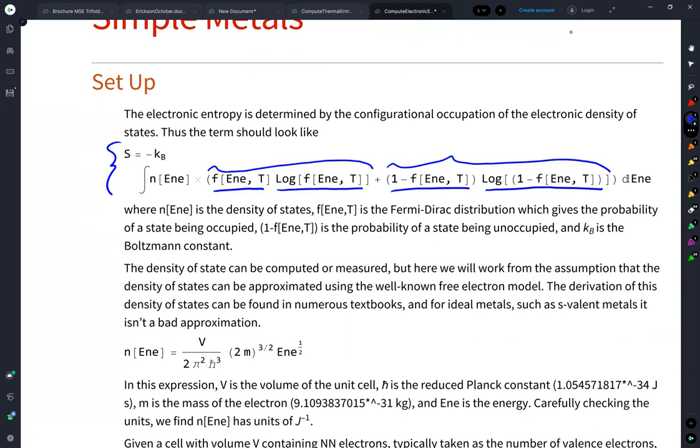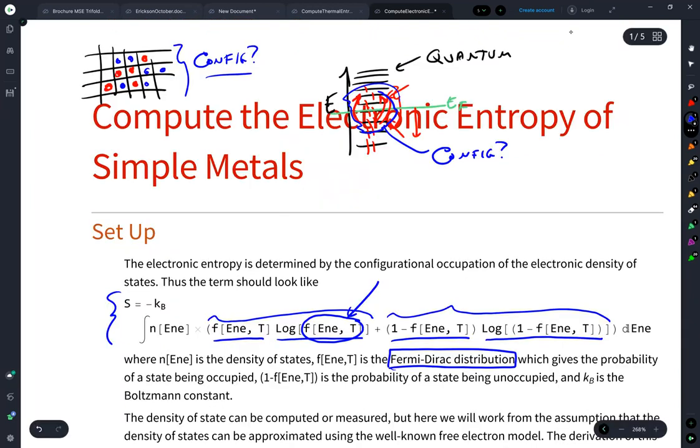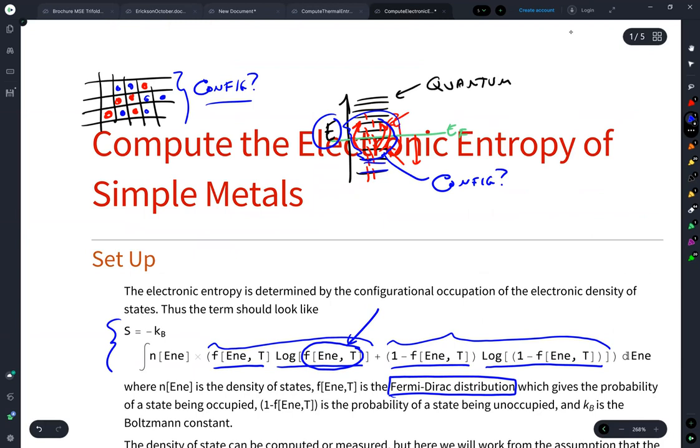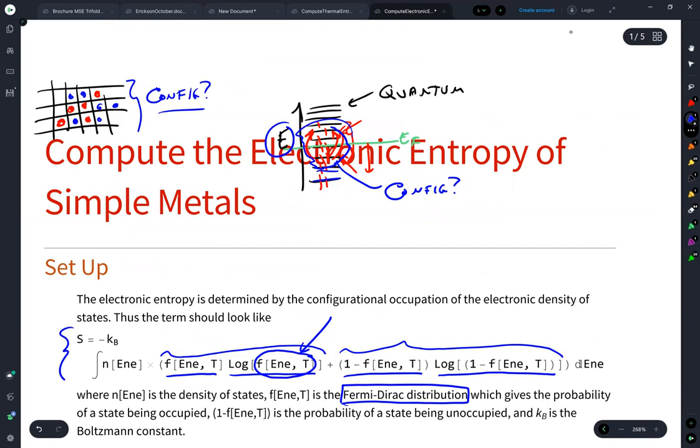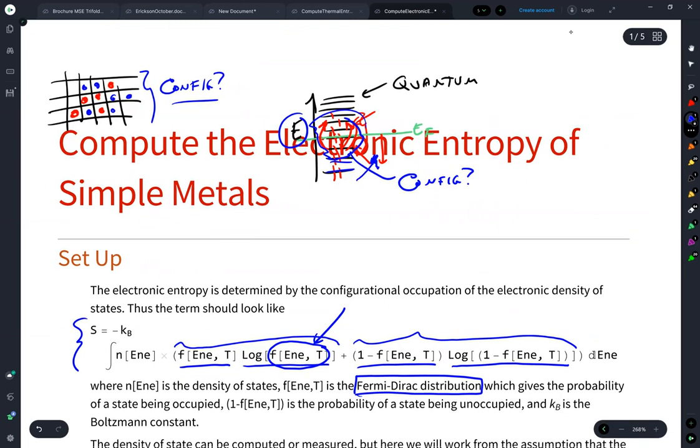And those probabilities are given by what I'm calling here F, and that is our Fermi-Dirac distribution, because these are fermions, so they're quantum particles. And each one of these is at a different energy level. So we have to integrate over the entirety of the energy levels.